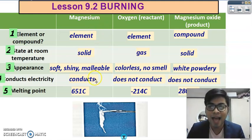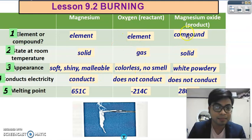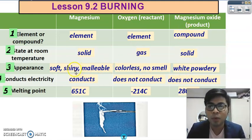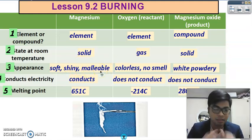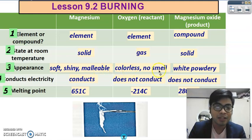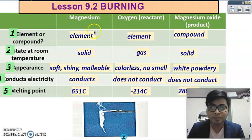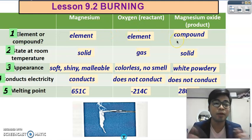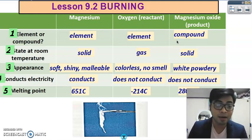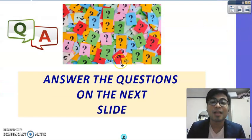This table shows the differences between magnesium as a reactant, oxygen as a reactant, and magnesium oxide as the product. Magnesium is malleable and shiny — it can be bent. Magnesium oxide is white and powdery. Magnesium conducts electricity. Take note of the melting points as well. Two of them are elements — magnesium and oxygen — and magnesium oxide is a compound. If you need more time to read this, hit the pause button.